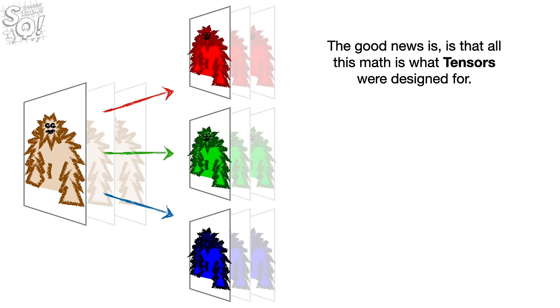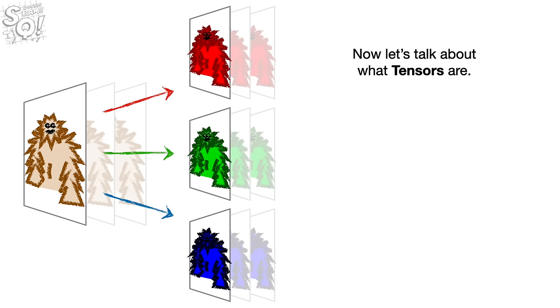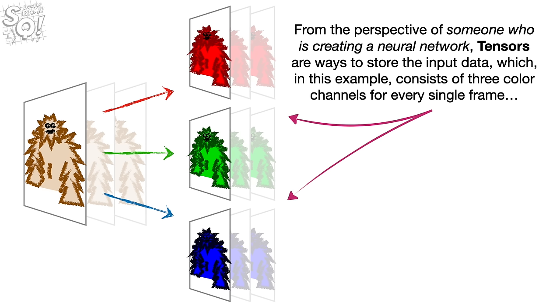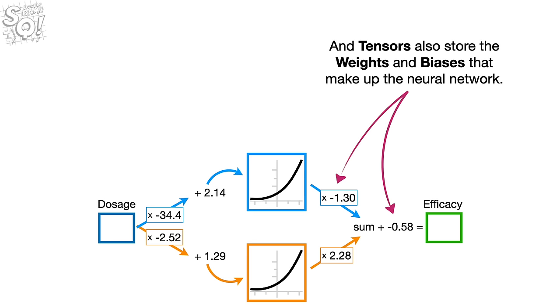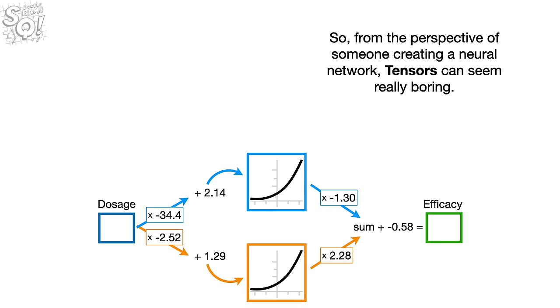The good news is that all this math is what tensors were designed for. Now let's talk about what tensors are. From the perspective of someone who is creating a neural network, tensors are ways to store the input data, which, in this example, consists of three color channels for every single frame. But, as we saw earlier, the input can also be super simple and consist of a single value. And tensors also store the weights and biases that make up the neural network. So, from the perspective of someone creating a neural network, tensors can seem really boring. Wah-wah!